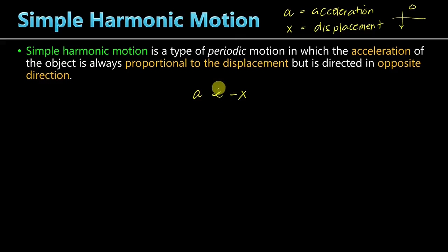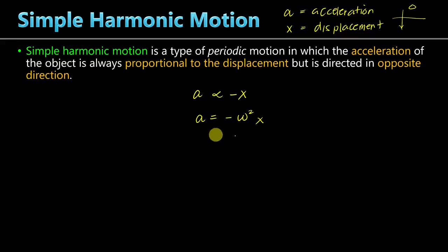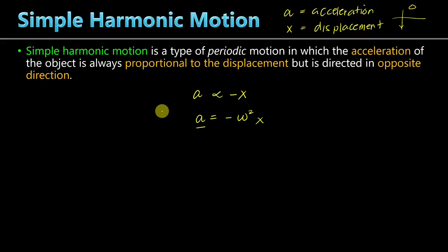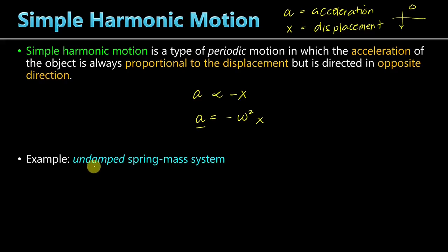If we make an equation out of this, we introduce a proportionality constant equal to omega squared. This omega squared is called the angular frequency. So this is the equation that describes simple harmonic motion: the acceleration is always proportional to the displacement, but its direction is always opposite. An example of a system that exhibits simple harmonic motion is the motion of a spring mass system without any damping — that's why we call it an undamped spring mass system.